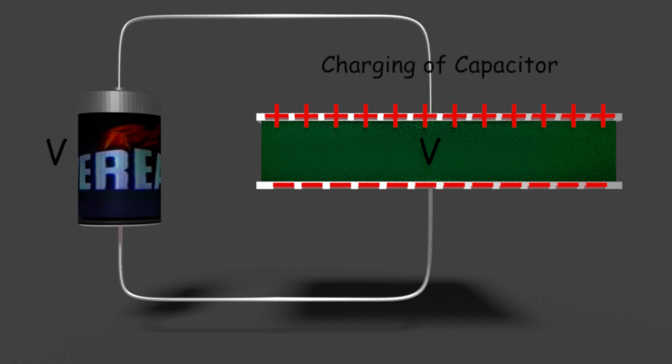This charging process continues depending on the voltage appearing across the capacitor, but it does not depend on the charge accumulated in the capacitor. For the same voltage appearing across a capacitor, the charge accumulated may be different for different capacitors. How much charge is required to be accumulated or stored in a capacitor for developing a certain voltage across it depends on a typical property of the capacitor called capacitance.